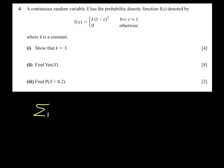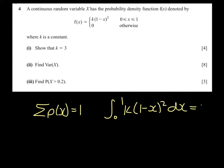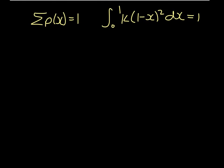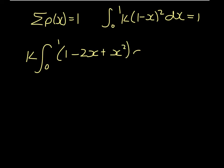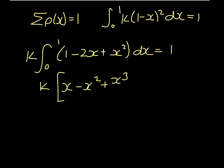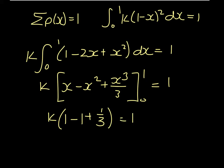The sum of all probabilities must be 1. So the integral from 0 to 1 of k times (1 minus x) all squared has to be 1. Bringing k in front of the integral sign and expanding the brackets gives 1 minus 2x plus x squared with respect to x equals 1. So k times (x minus x squared plus x cubed over 3) from 0 to 1 has to equal 1.